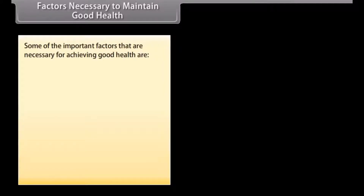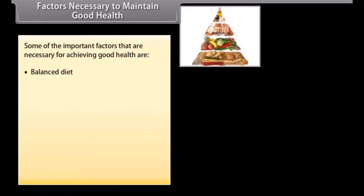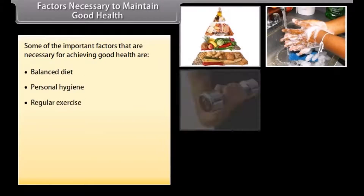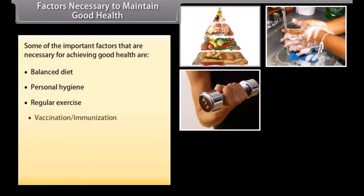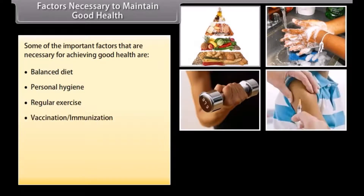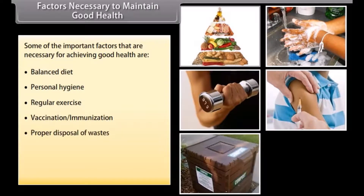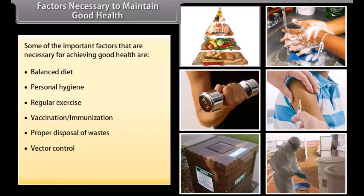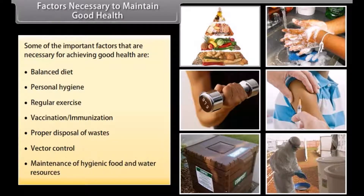Some of the important factors necessary for achieving good health are: balanced diet, personal hygiene, regular exercise, vaccination, immunization, proper disposal of wastes, vector control, and maintenance of hygienic food and water resources.